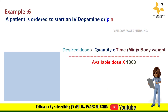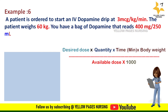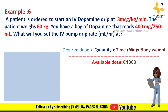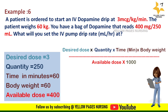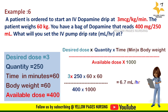Example 6: A patient is ordered to start an IV dopamine drip at 3 microgram per kg per minute. The patient weighs 60 kilogram. You have a bag of dopamine that reads 400 mg per 250 ml. The desired dose is 3, quantity is 250, time in minutes is 60, body weight is 60 kilogram, available dose is 400. Applying all into the formula, we get the answer 6.7 ml per hour. So the rate of infusion for this calculation will be 6.7 ml per hour.